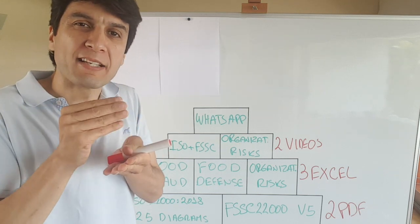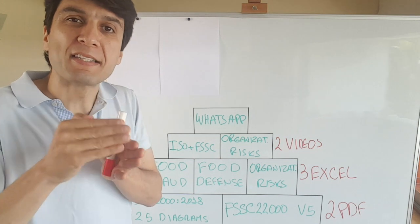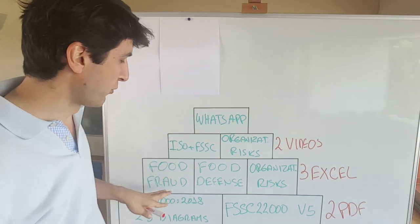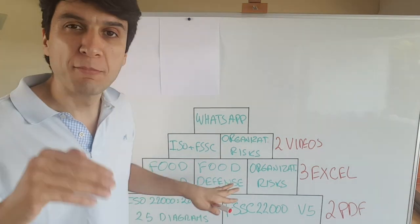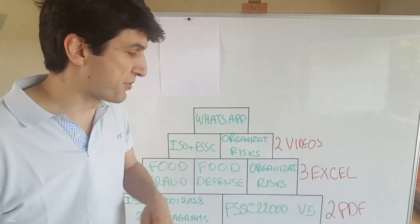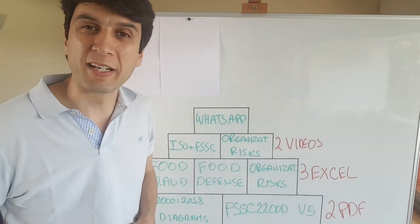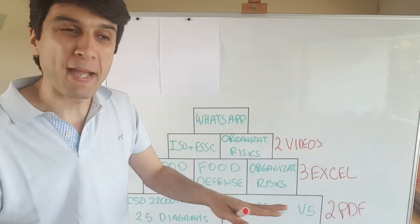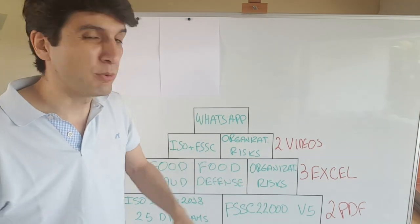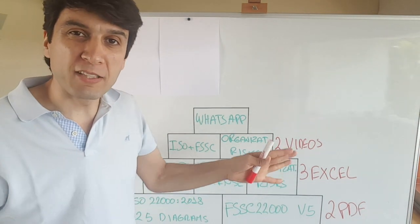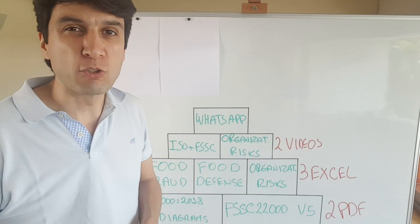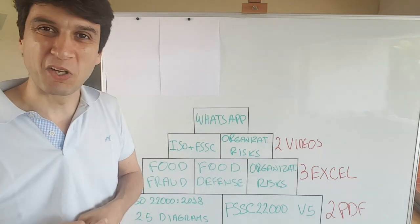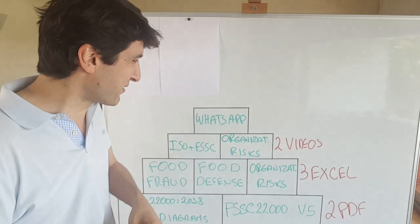Each Excel spreadsheet is a step in your way to implement a food fraud program, food defense program, or the organizational risk. You can sit down with your top management and work through the Excel file. And at the end of the Excel file you should have everything you need related with this clause. Isn't that great?